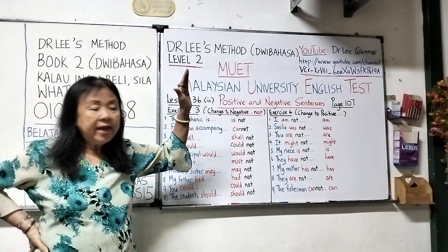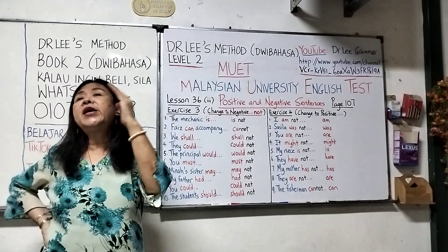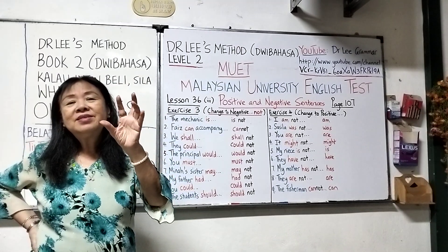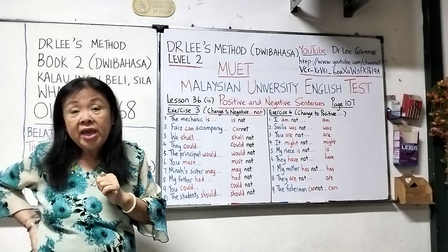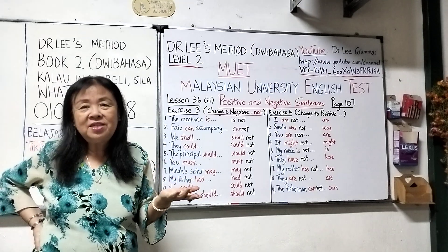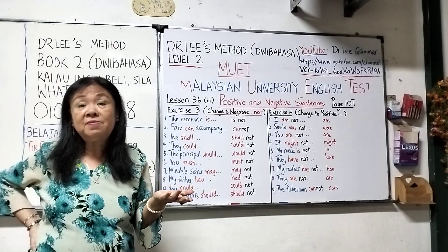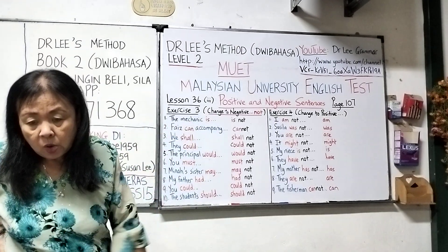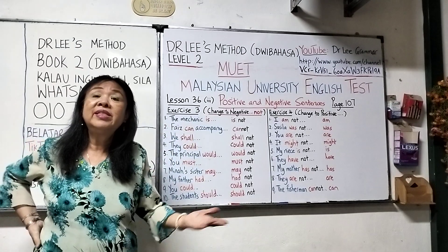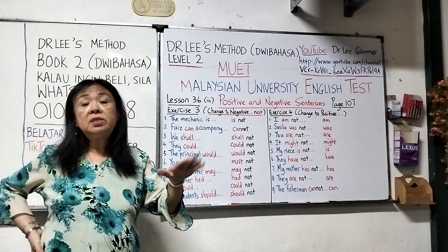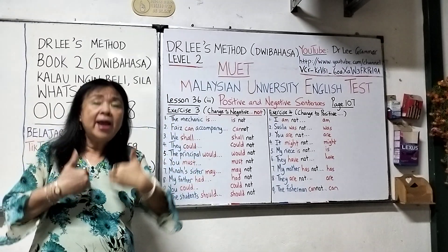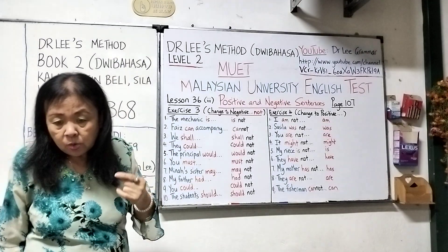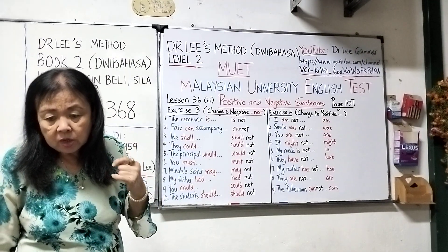Now the other side — Exercise four. I give you the negative and you change to the positive. It's very simple — just throw the 'not' away and it becomes a positive statement or positive sentence. Question one: 'I am not going to work tomorrow.' Negative — change to the positive. Throw the 'not' away: 'I am going to work tomorrow.'